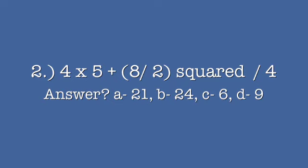This one's answer should be 24. The parentheses 8 divided by 2 equals 4 squared equals 16. 4 times 5 is 20 and 16 divided by 4 is 4. You still have to add those together. The 20 plus the 4 equals 24.